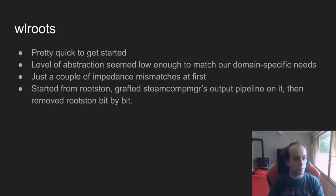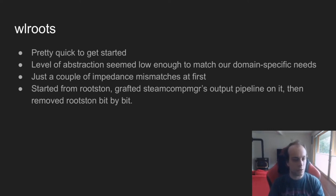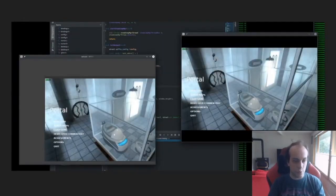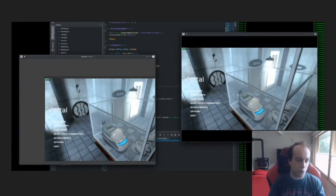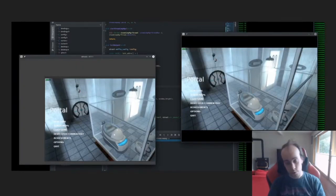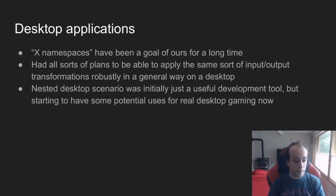I started from rootston — an example compositor based on wlroots that had a nice disclaimer saying 'under no circumstances should you fork this and create your own compositor from it' — so I did that. Once that was up and running, I merged it with the SteamCompMgr codebase and plumbed the output pipeline to Wayland, exporting DMA buffers from Wayland via a sideband. Once running, I removed the rootston part to get back to normal size and bare-bones functionality.